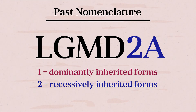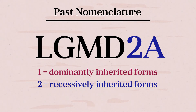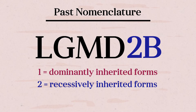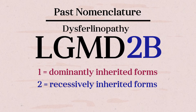For example, the first LGMD discovered was called LGMD2A, a calpainopathy, and the second was LGMD2B, a dysferlinopathy. Both are recessively inherited.